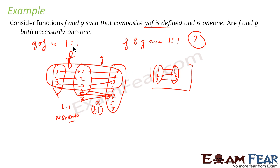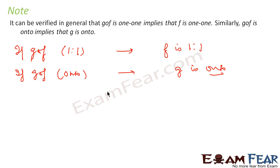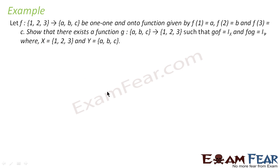To summarize: if gof is one-one, then f must be one-one but g need not be one-one. Similarly, if gof is onto, then g must be onto but f need not be onto. Please memorize this general statement.